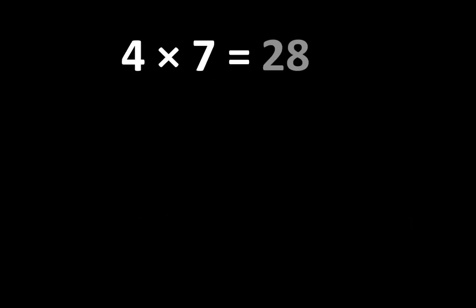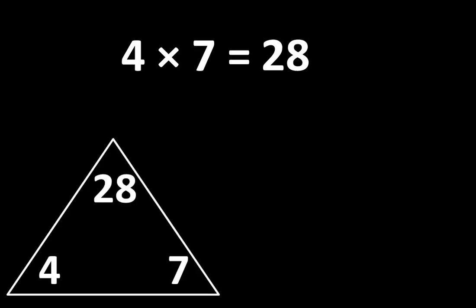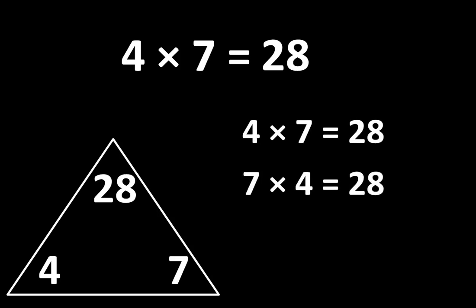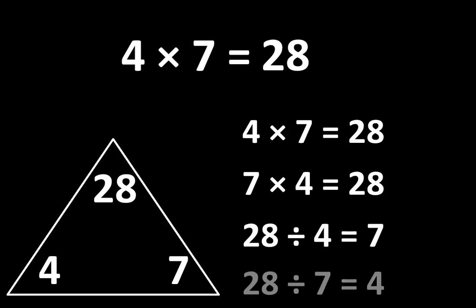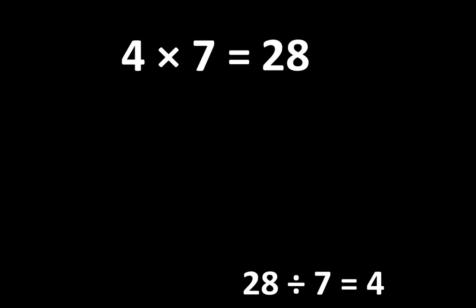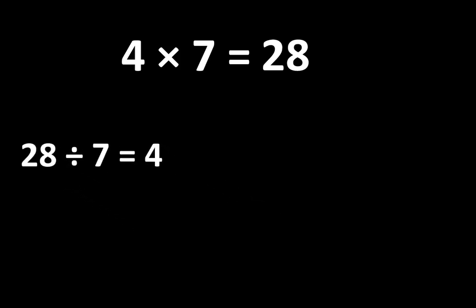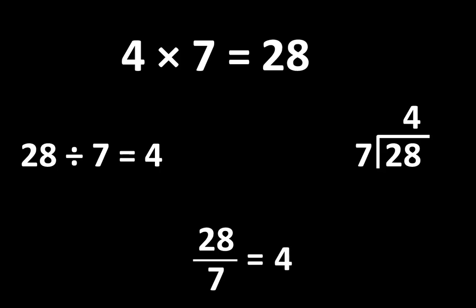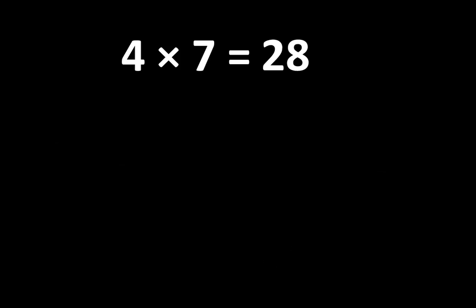4 x 7 is equal to 28. Let's examine some ways that 4, 7, and 28 are related to each other. If 4 x 7 is equal to 28, then 7 x 4 is also equal to 28. And since multiplication is related to division, we also know that 28 divided by 4 is equal to 7, and 28 divided by 7 is equal to 4. There are several different ways to write this idea, and that can be very useful. So understanding 4 x 7 is more than simply knowing that the product is 28.